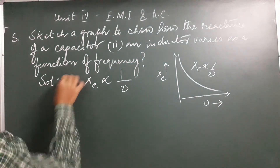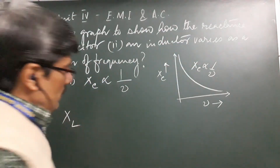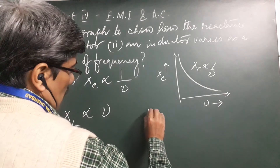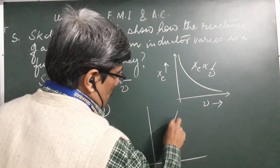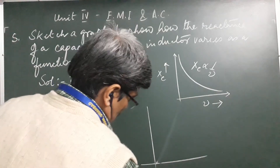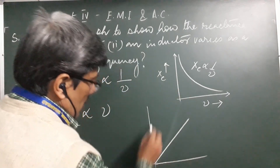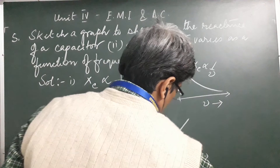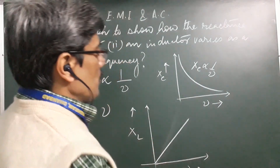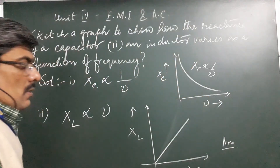For the second one — an inductor — XL = 2πνL, so the frequency is directly proportional to XL. In this case, the curve would be a straight line. It should be as straight as possible. This is frequency on the x-axis and XL on the y-axis. These are the two variations: the inductor gives a linear variation, while the capacitor gives a non-linear variation. Please remember the natures of these variations — this is important.